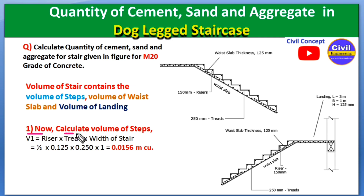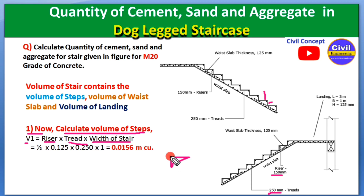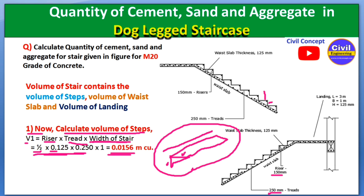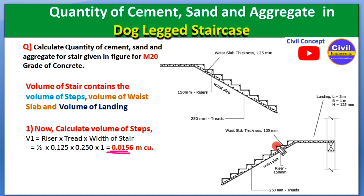In step one, we calculate the volume of steps. The formula is: V1 = (1/2) × riser × tread × width of stair. This is because the step acts as a triangular prism (wedge shape). From the figure, the riser is 150 mm and the tread is 250 mm. Multiplying half the riser by the tread by the width gives us the volume of a single step.